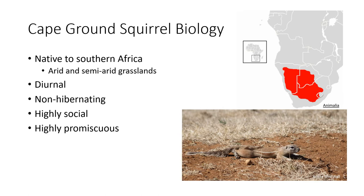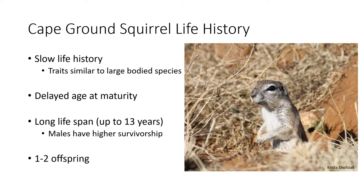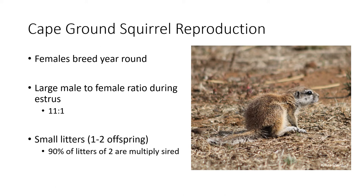For our research, we focused on Cape ground squirrels, who are a diurnal, non-hibernating, highly social, promiscuous rodent native to southern Africa. Capes could be considered to have a slow life history when compared to other rodents, as their traits are more similar to large-bodied species, such as a delayed age of maturity, a long lifespan of up to 13 years, and small litters for females of only one to two offspring.